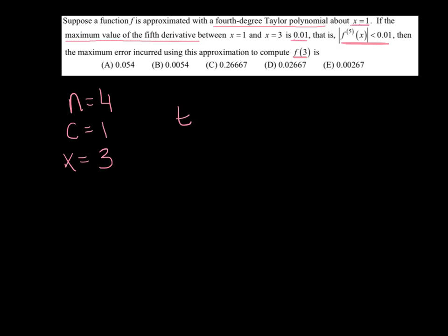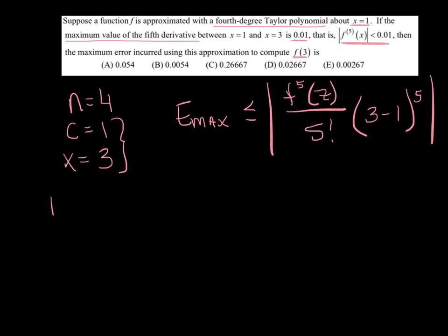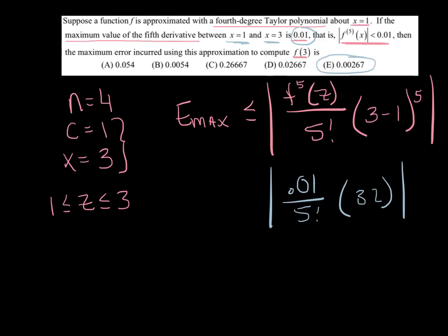So the maximum error is guaranteed to be less than - I'm substituting 4 for all of the n - so this is the fifth derivative evaluated at some mysterious z, divided by 5 factorial, and we need 3 minus 1 to the fifth power. Now z can be anything between those two values. It's got to be somewhere between 1 and 3, and conveniently they talked about the fact that between 1 and 3, the fifth derivative is never bigger than 0.01. So I'm going to say 0.01 divided by 5 factorial times 2 to the fifth, throw that in your calculator, and I ended up with 0.00267.